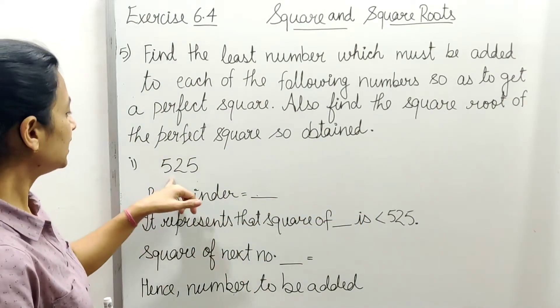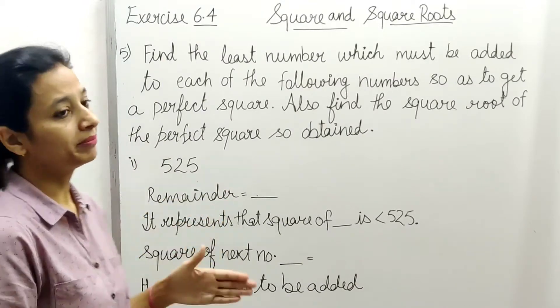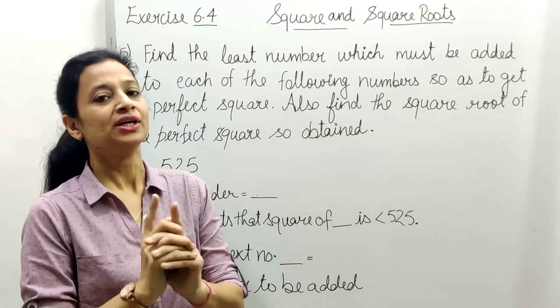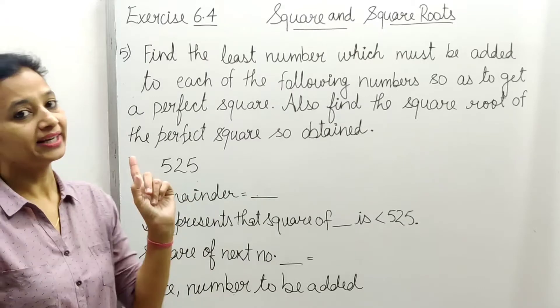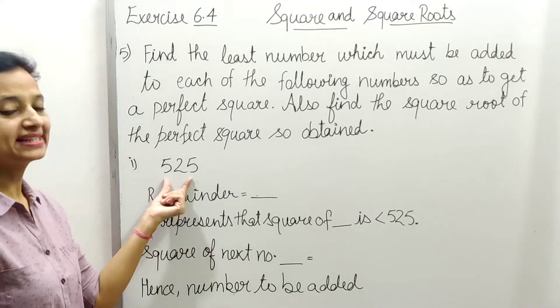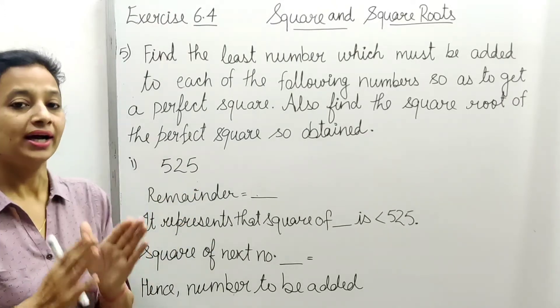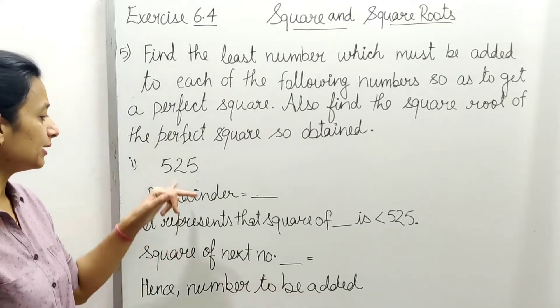Find the least number which must be added to each of the following numbers so as to get a perfect square. Also find the square root of the perfect square so obtained. The question asks us to take numbers that are not perfect squares, add the least number to make them perfect squares.